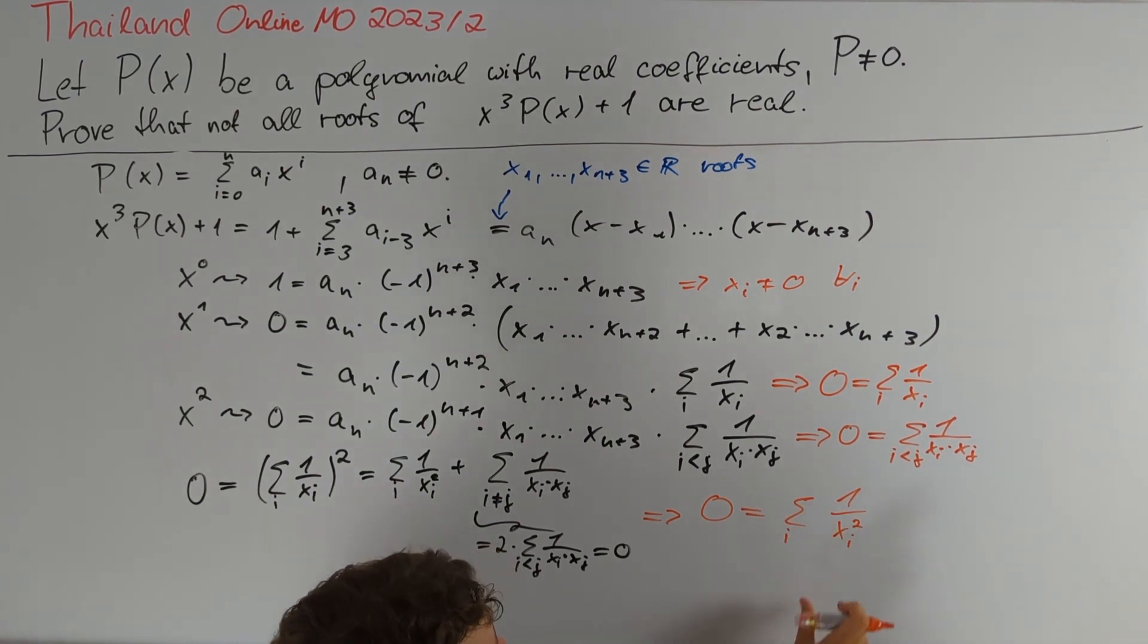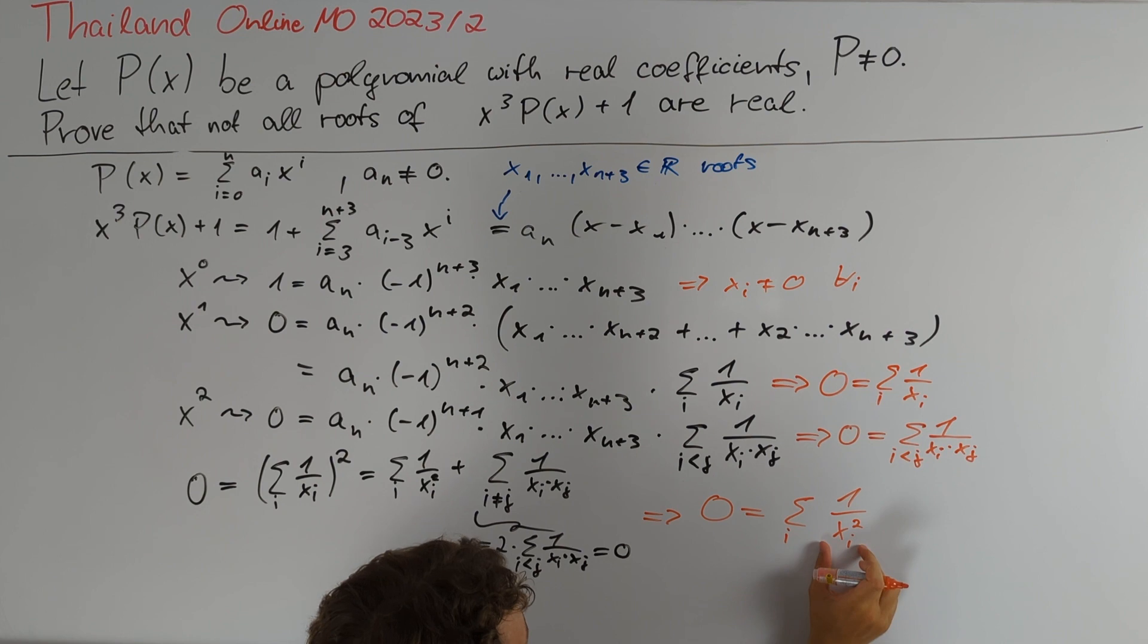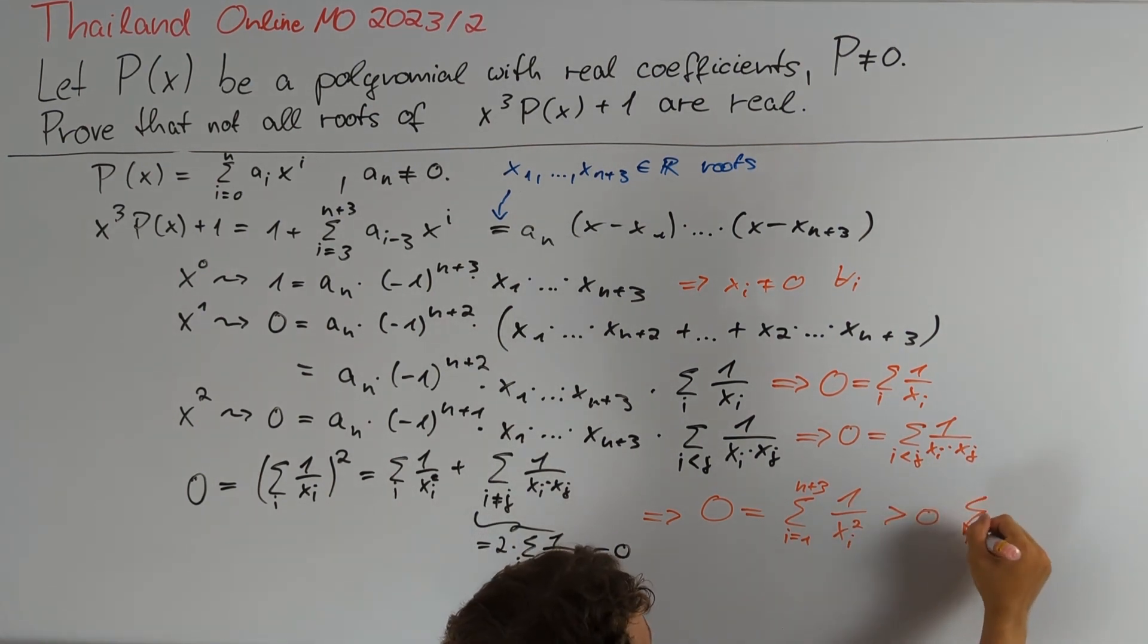Now we assume that the xᵢ are real numbers. But for a real number xᵢ, 1 divided by xᵢ squared is a positive real number. Since we are summing from i equal to 1 up to n+3, we have a positive number of summands, each of which are positive real numbers, therefore this is greater than 0 and thus we get a contradiction.